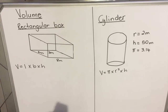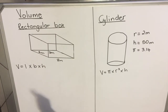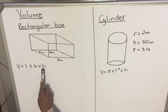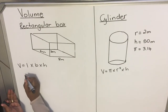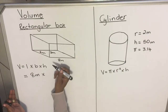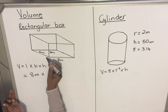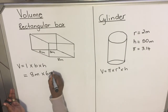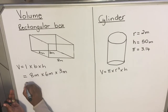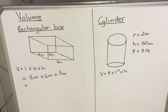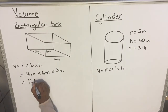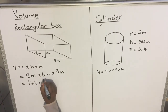We are given a formula here — you will always be given a formula. Volume is equal to length times breadth times height. In our question, our length is 8 meters, times our breadth which is 6 meters, multiplied by our height which is 3 meters. Then you punch that into your calculator, and you get 144 meters cubed.